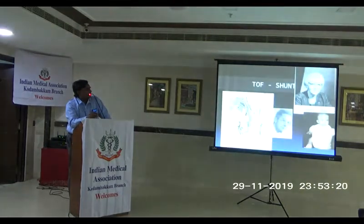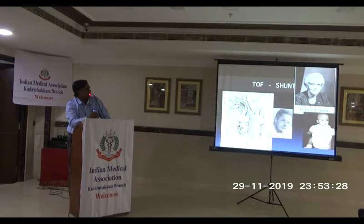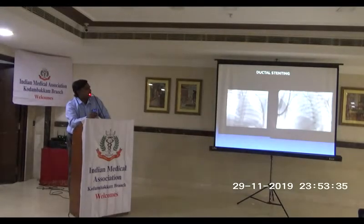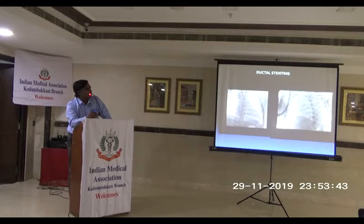This is the BT shunt, where we augment the pulmonary blood flow. A connection is made between the subclavian artery and the right pulmonary artery. It can be performed by a cardiologist or done by the surgeon. Ductal stenting is another option where the ductus is stented to keep it open with a stent — pretty much achieving what a shunt can do, increasing the pulmonary blood flow.